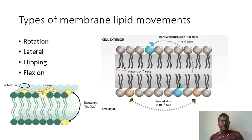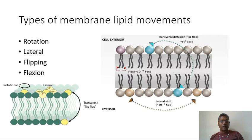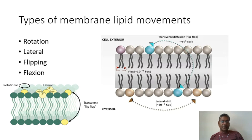Membrane asymmetry is critical for membrane functions. Transverse movement is what allows the asymmetry to be maintained. Uncatalyzed movement of phospholipids between the bilayers is possible, but this is very, very slow and cannot be relied upon to maintain the asymmetry equilibrium. Instead, lipid translocator proteins catalyze the phospholipid movement between the bilayers.